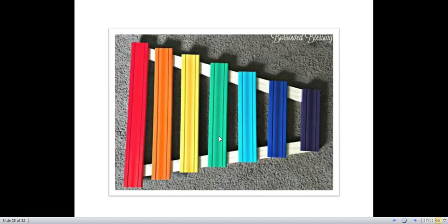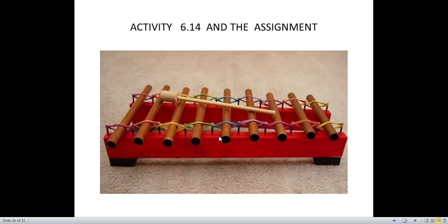Another example. Activity 6.14: let's make a xylophone. You will need pieces of metal pipes, a thin wooden plank, a pair of scissors, cello tape, and nails. Try to make a xylophone like this. There is an assignment given in your textbook, section 6.5, on how to make a xylophone.